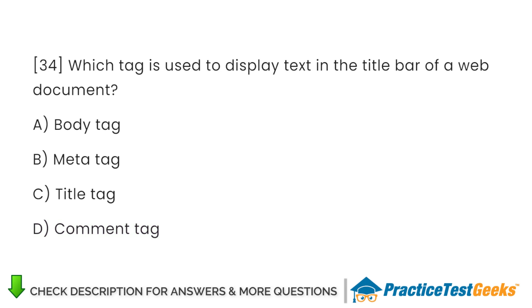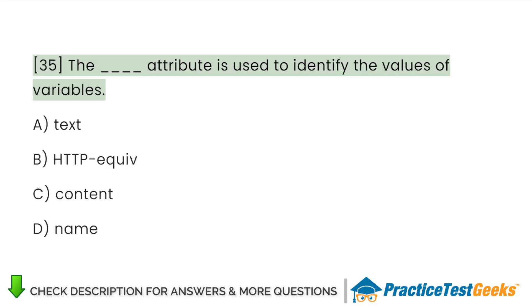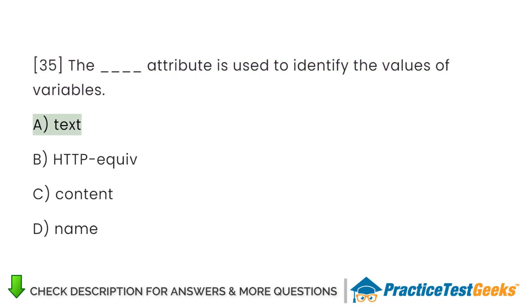Which attribute is used to identify the values of variables? A. Text. B. HTTP Equiv. C. Content. D. Name.